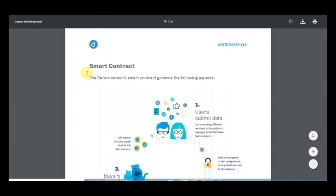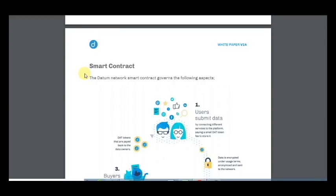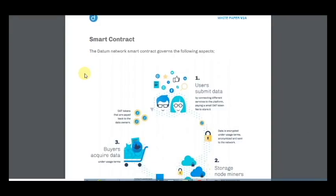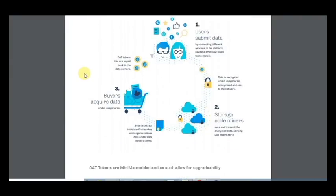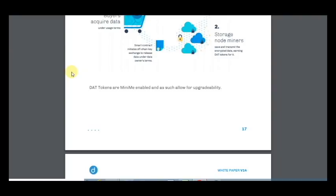This is information about smart contracts. The Datum network smart contract governs the following aspects: users submit data by connecting different services to the platform, paying a small DAT token fee to store it. When storage nodes mine, serve and transmit the encrypted data, they earn DAT tokens. Buyers acquire data under usage terms, and data tokens are upgradeable.